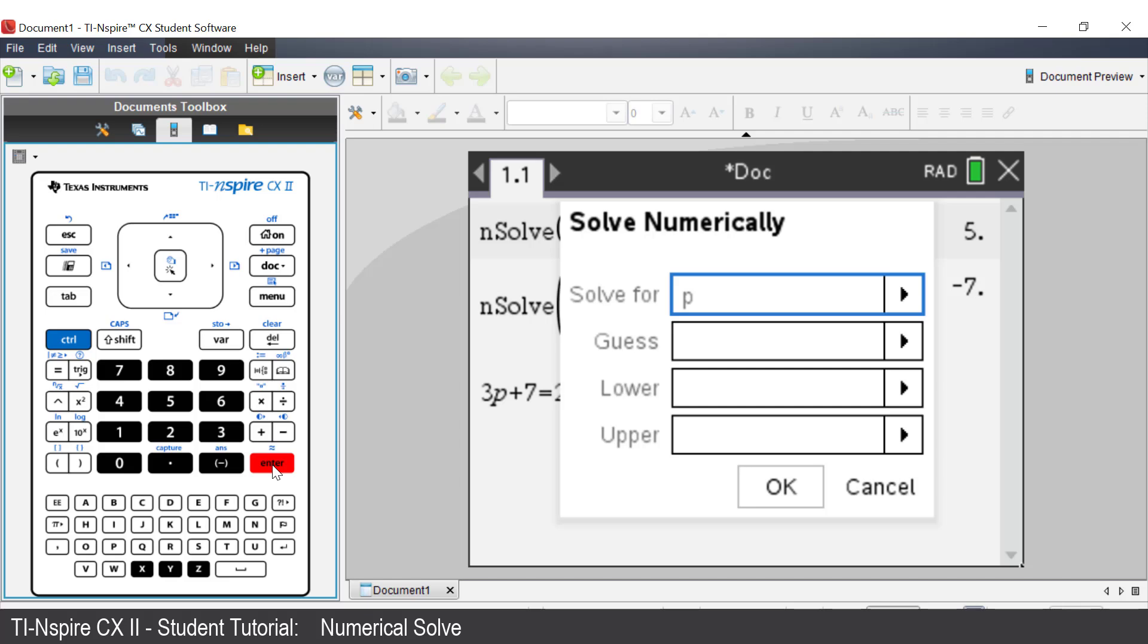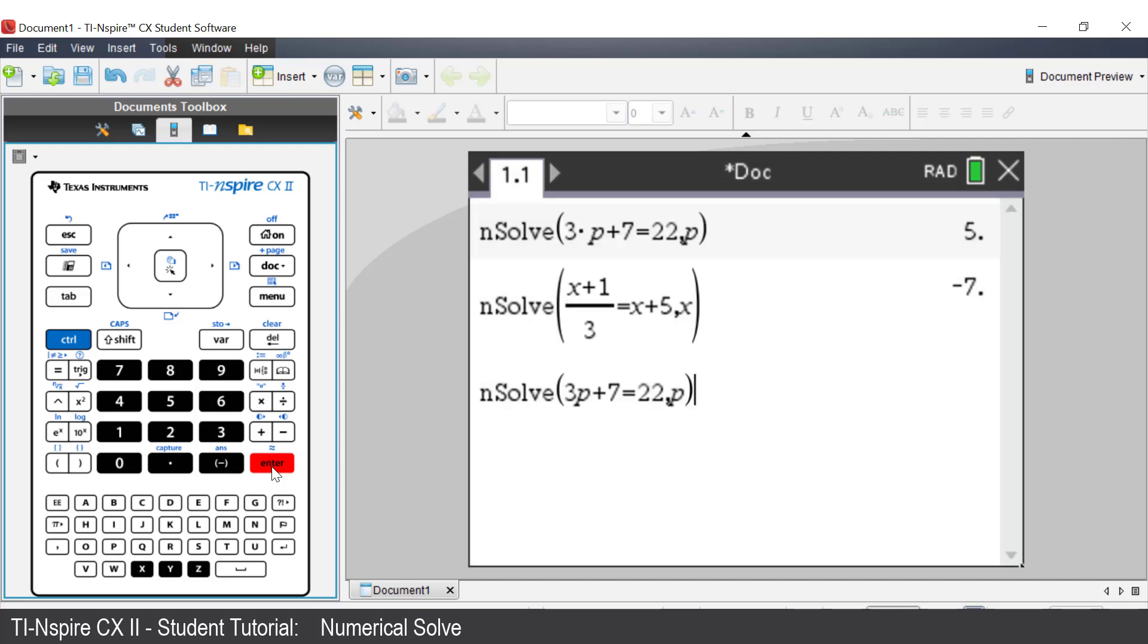As you have entered the equation, the calculator has filled in what unknown you are solving for. If you wish to, you may enter a guess. Just press Enter. P equals 5.